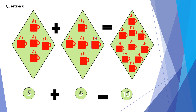Question 8. 5 cups of tea plus 5 cups of tea equals 10 cups of tea. So in the number form, 5 plus 5 equals 10.